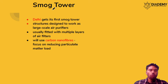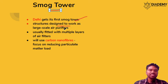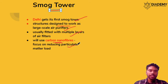The next topic is the smog tower. A smog tower has come up in Delhi — the first ever smog tower. These are designed to work as large-scale air purifiers, usually fitted with multiple layers of air filters. It uses carbon nanofibers which focus on reducing particulate matter, specifically PM10 and PM2.5.